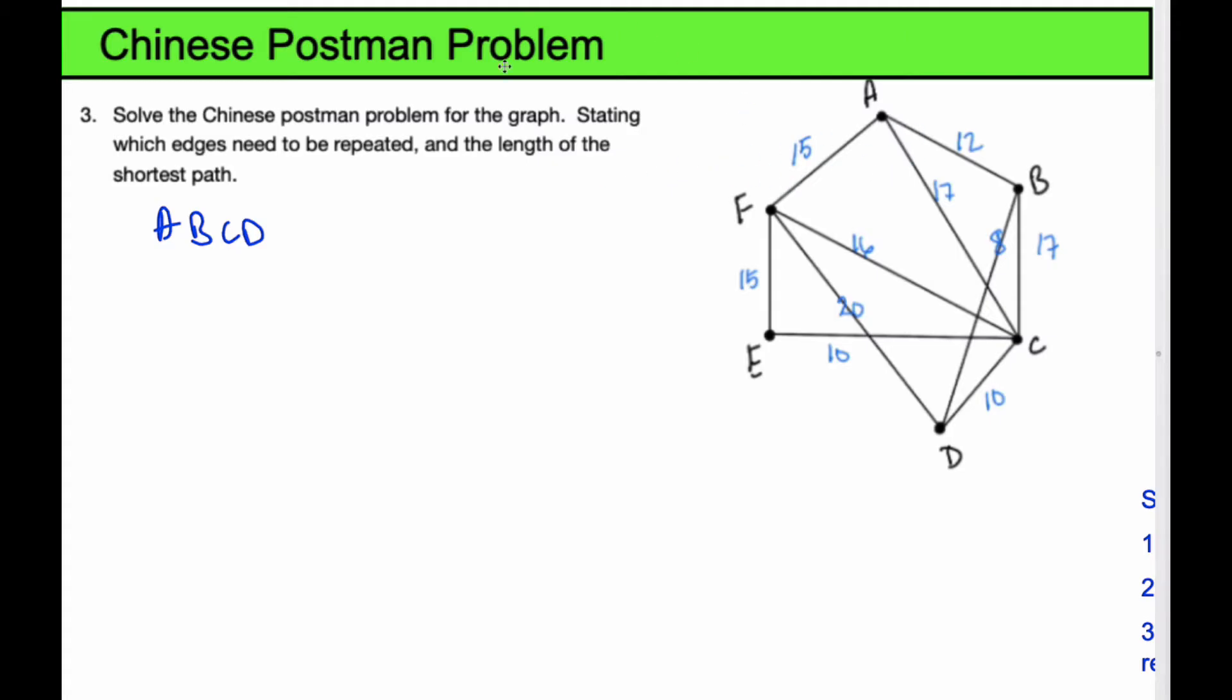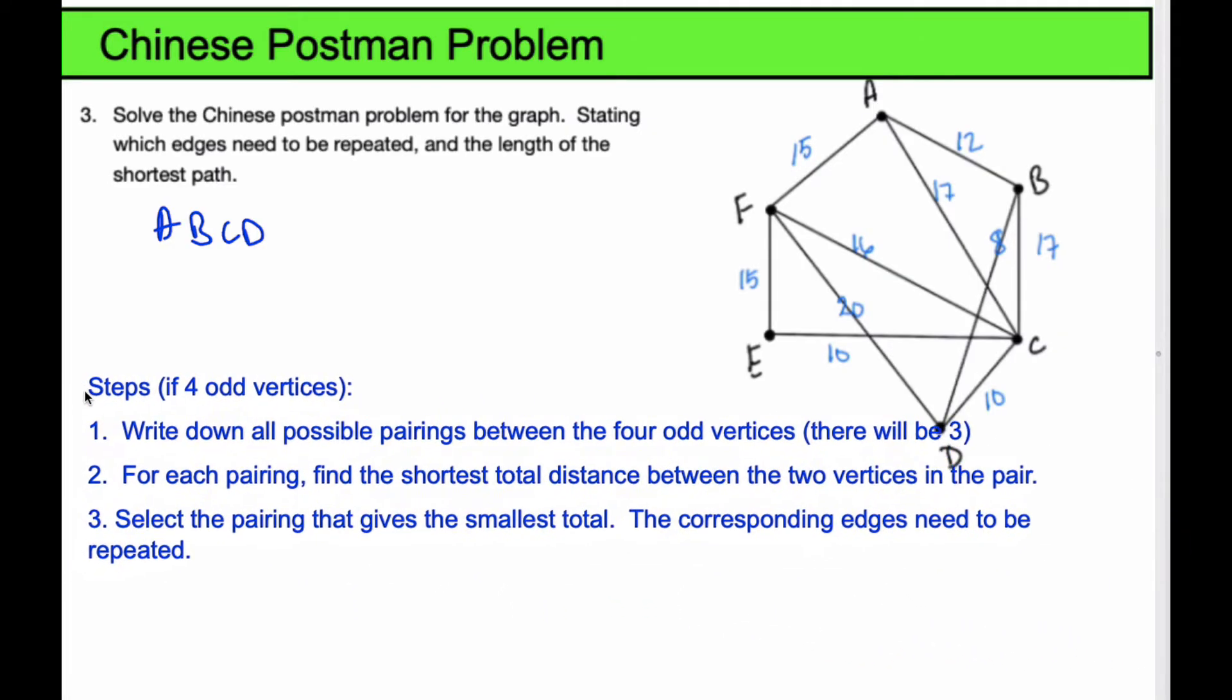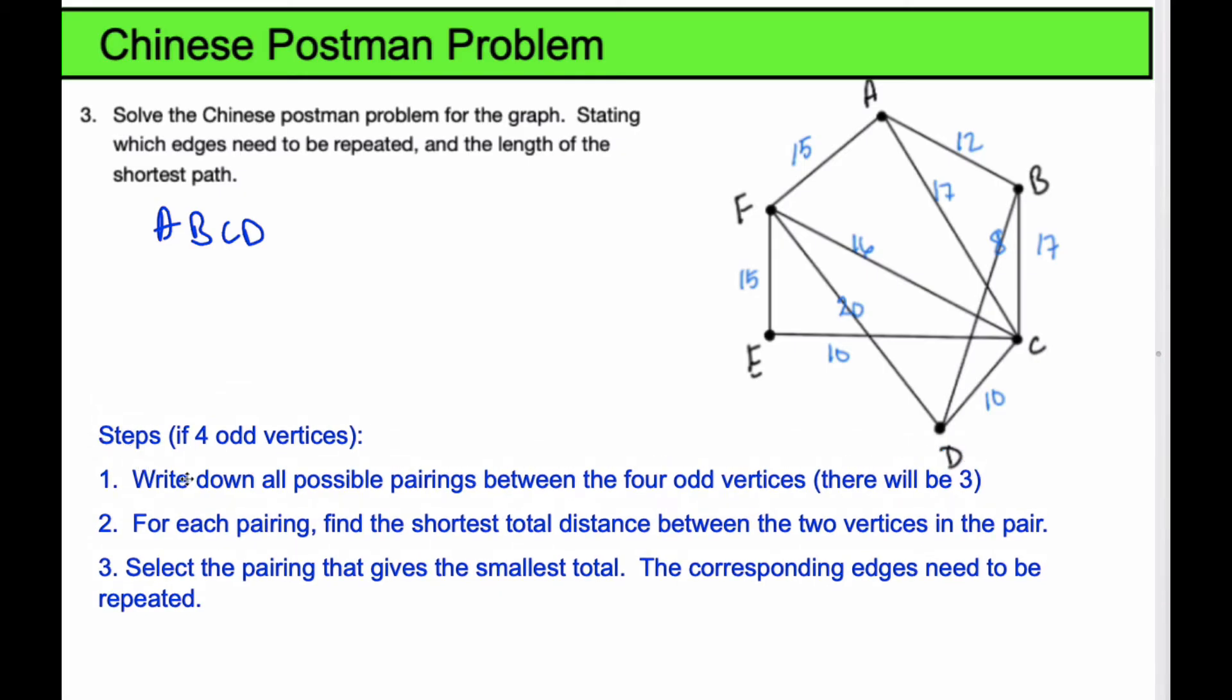So now I have 4 vertices that are odd, and there are steps to consider when we have 4 odd vertices. The first step is to write down all possible pairings between the odd vertices, and there will be 3 of them.